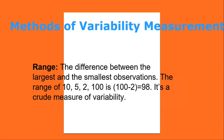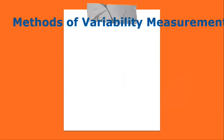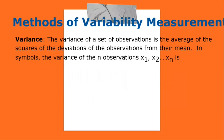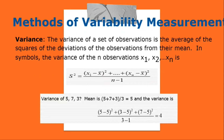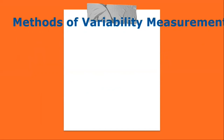Variance: the variance of a set of observations is the average of the squares of the deviations of the observations from their mean. Variance of 5, 7, 3: mean = (5 + 7 + 3) / 3 = 5, and the variance = [(5−5)² + (3−5)² + (7−5)²] / (3−1) = 4. Standard deviation: the square root of the variance. The standard deviation of this example is 2.